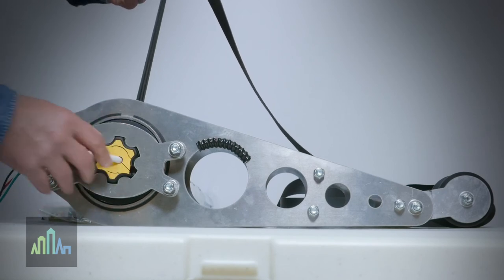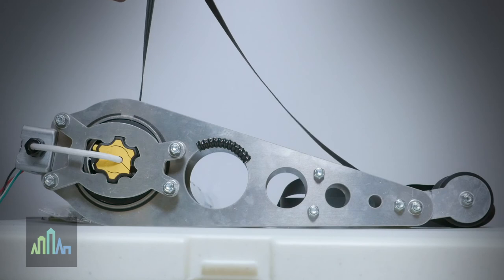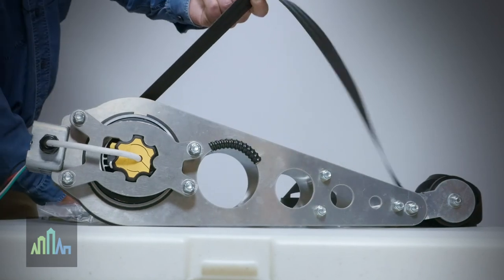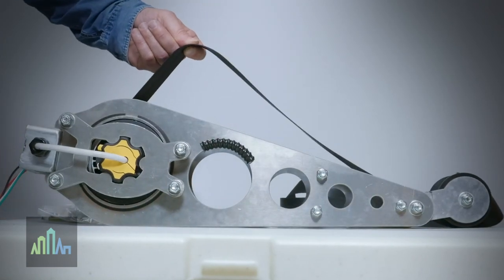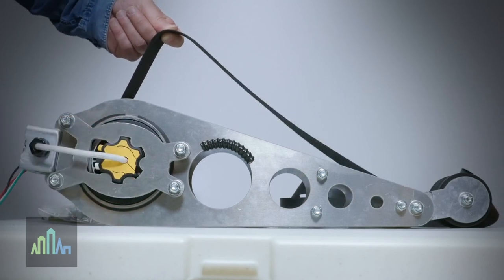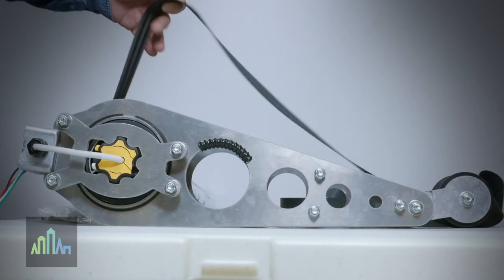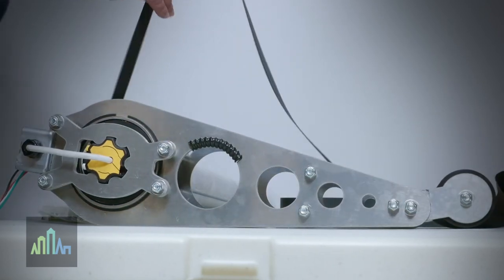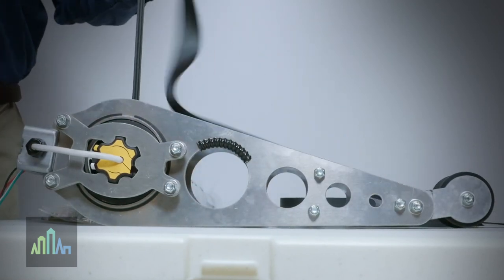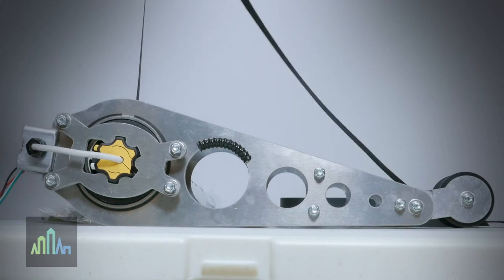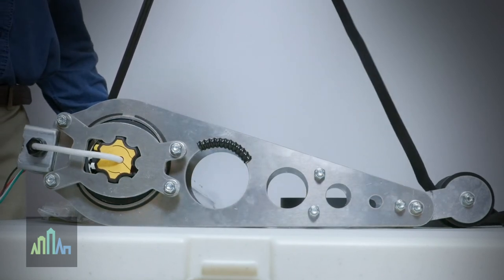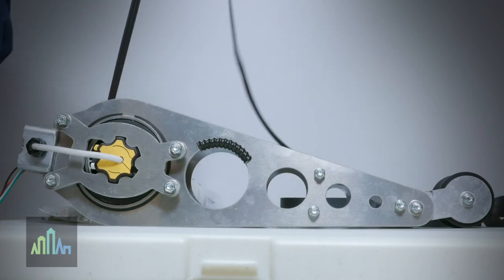I'm going to go ahead and put it back in and let's say we want one revolution. Let's say that is the up setting. Now I'm going to pop that limit switch out. Notice it stopped again at the 12 o'clock position and that gives us approximately one revolution.